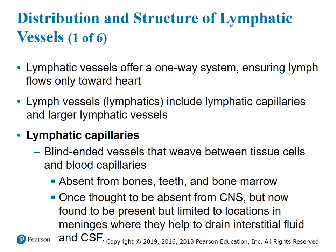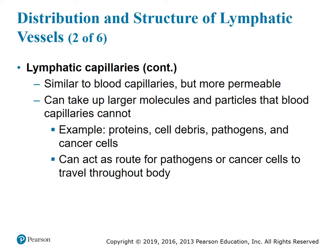Distribution and structure of lymphatic vessels. Lymphatic vessels offer a one-way system ensuring lymph flows only toward the heart. Lymph vessels include the lymphatic capillaries and larger lymphatic vessels. Lymphatic capillaries are blind-ended vessels that weave between the tissue cells and blood capillaries. They are absent from bones, teeth, and bone marrow. They were once thought to be absent from the central nervous system, but are now found to be present but limited to locations in the meninges — the covering of the brain — where they help to drain the interstitial fluid and the CSF, or cerebrospinal fluid.